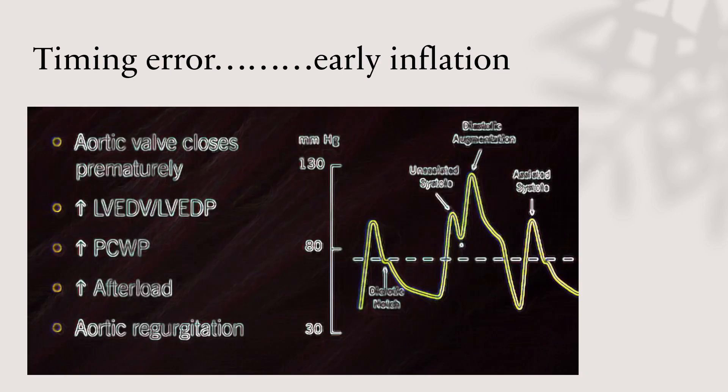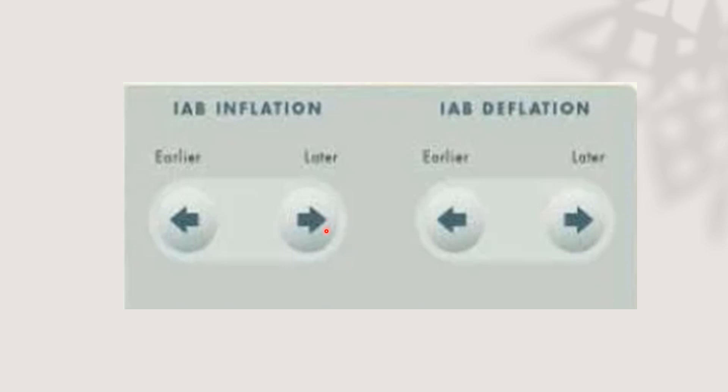As we mentioned before, if a patient has early inflation, it's a timing error. What is the effect on hemodynamics? Early inflation means the aortic valve will close prematurely. Premature closing of the aortic valve increases left ventricular end-diastolic volume and pressure, and all of this will reflect on pulmonary capillary wedge pressure. Also, it increases afterload and exacerbates the presence of aortic regurgitation. If we have early inflation, we will make it late by adjusting on the console till we have the proper curve.